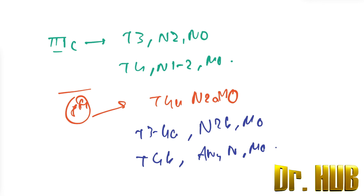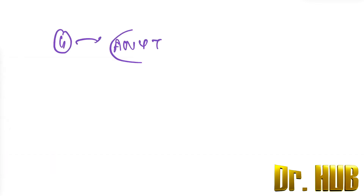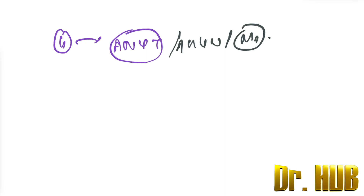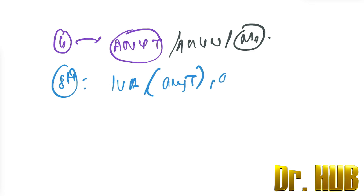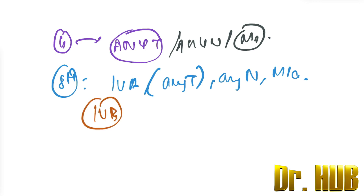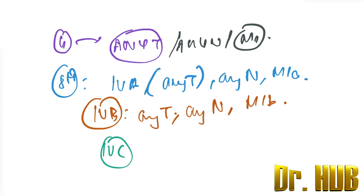Stage 4 in the 7th edition is any T, any N, M1. In the 8th edition, Stage 4A is any T, any N, M1A. Stage 4B is any T, any N, M1B. Stage 4C is any T, any N, M1C.